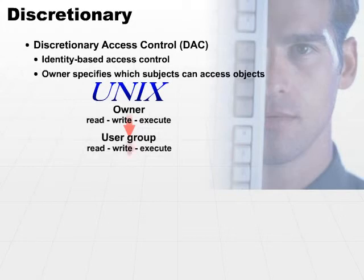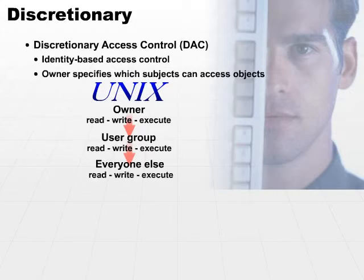Everyone else — that is, neither the owner nor a member of a specific group — also has read, write, and execute permissions, and you can turn each of these permissions on or off. This is just one example of discretionary access control.